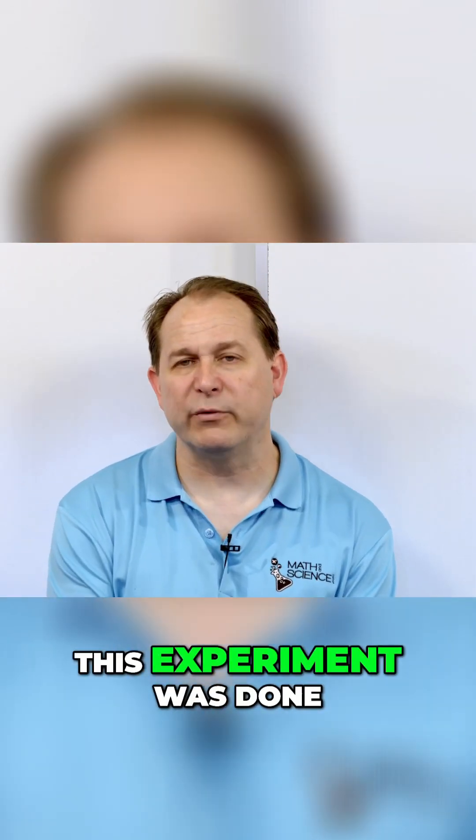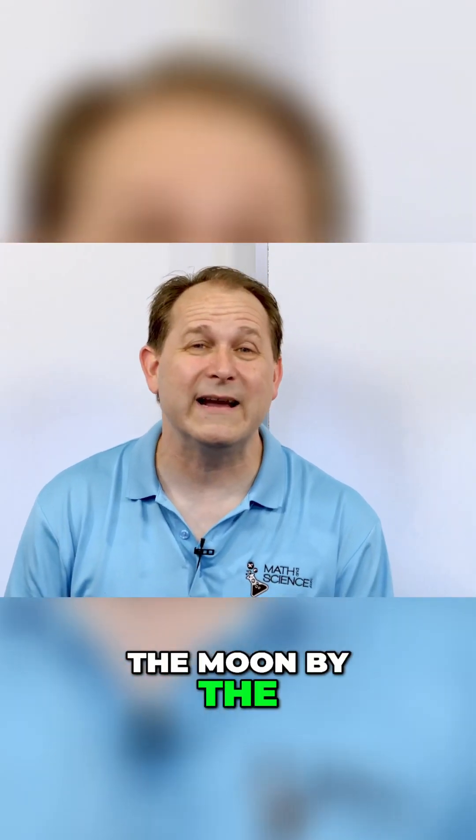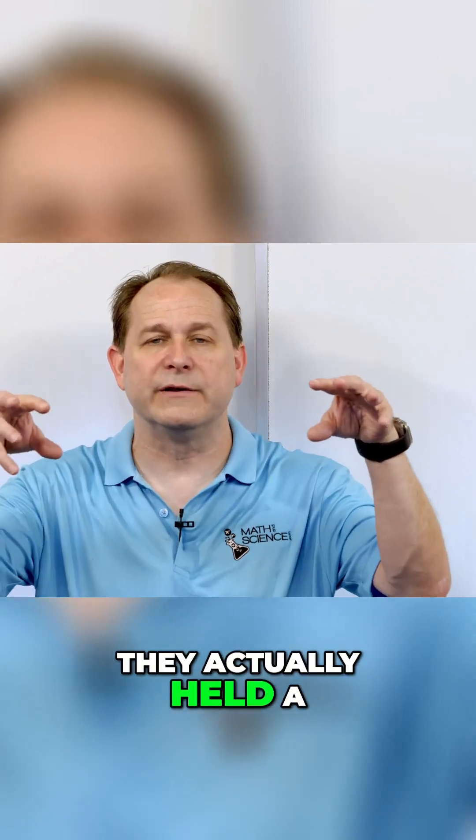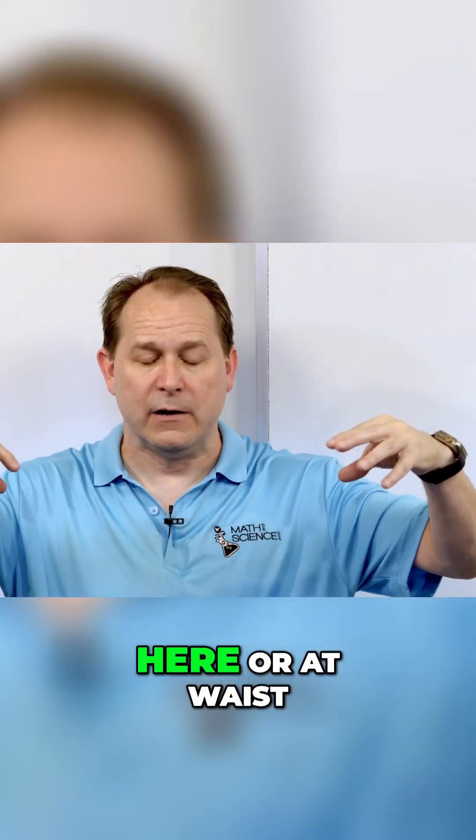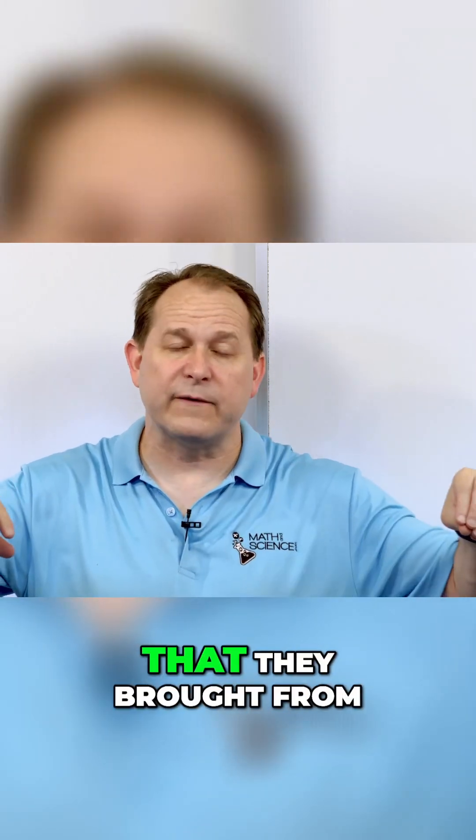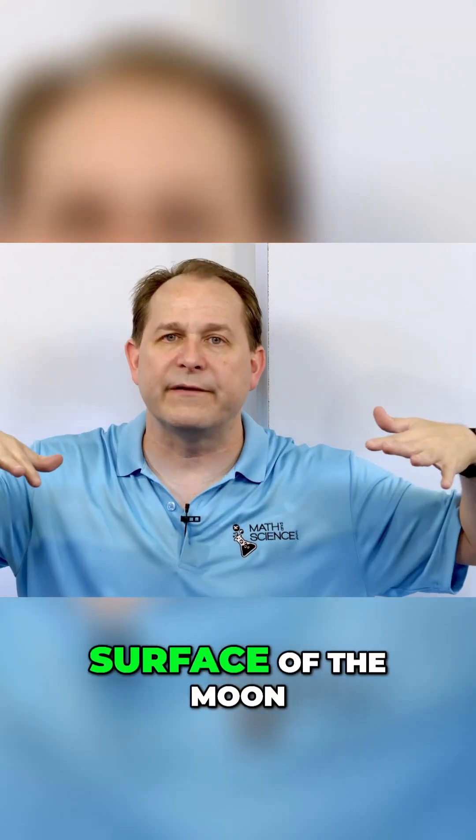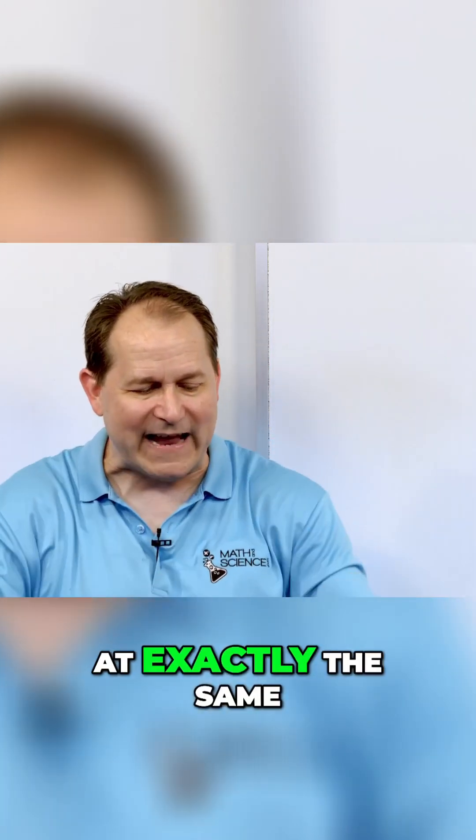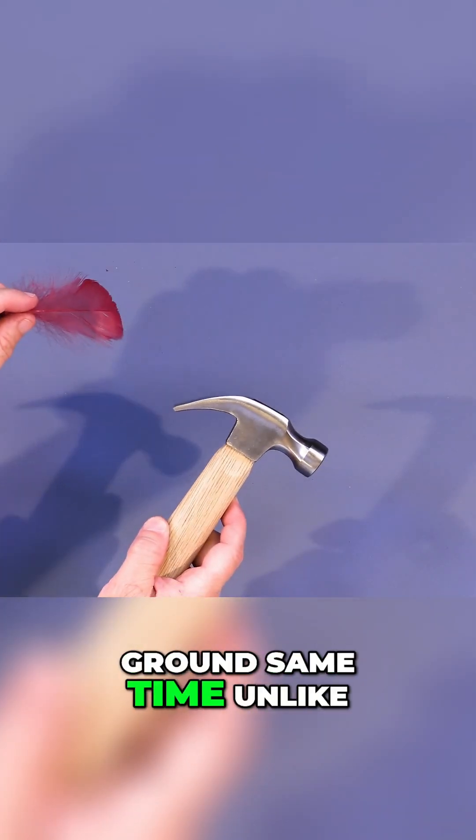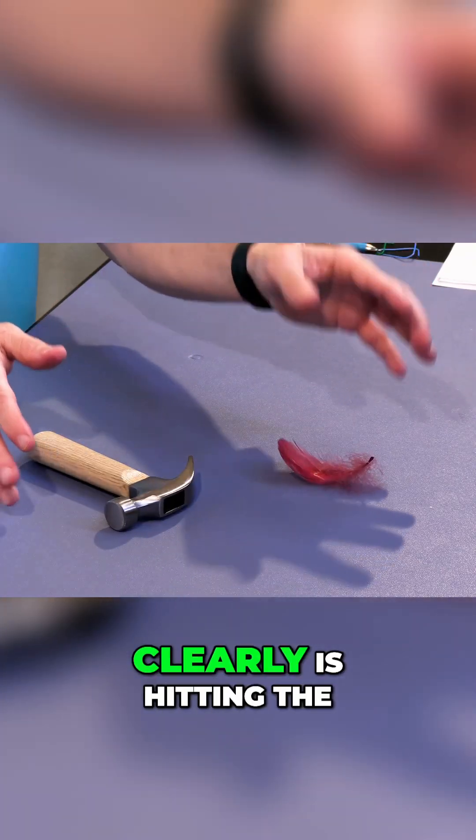It turns out that this experiment was done on the surface of the moon by the Apollo astronauts. They actually held a hammer at shoulder height or at waist height, and a feather that they brought from the Earth, and they drop them in the vacuum, which is the surface of the moon, and they go down at exactly the same rate and hit the ground at the same time, unlike this, where the hammer clearly is hitting the ground first.